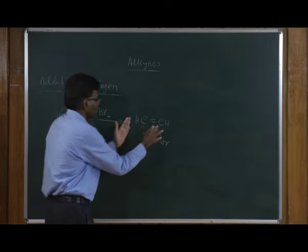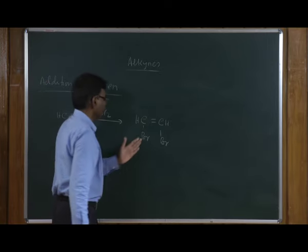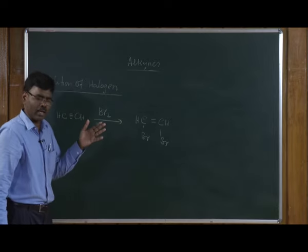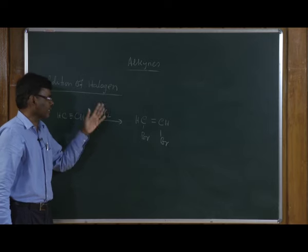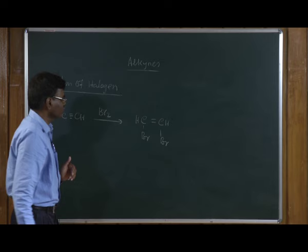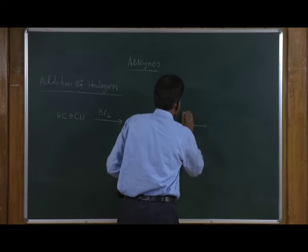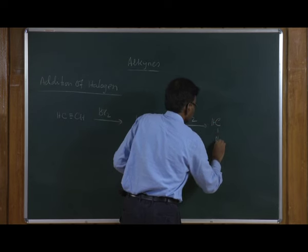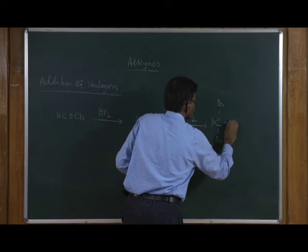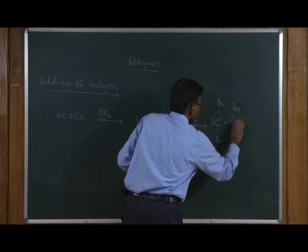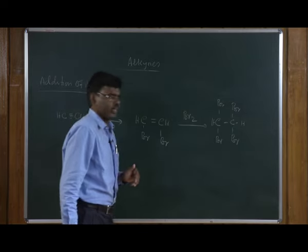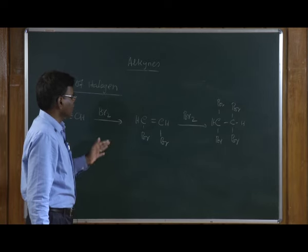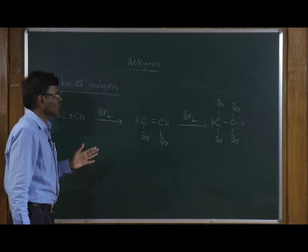The next reaction is addition with halogen. Alkynes readily undergo reaction with halogens. For example, when treated with bromine, it undergoes addition to the carbon-carbon triple bond to form 1,2-dibromoethene — a vicinal dibromide. This is an electrophilic addition reaction forming a bromonium intermediate. This can further react with another molecule of bromine to give the tetrabromo compound — 1,1-dibromo-2,2-dibromoethane.